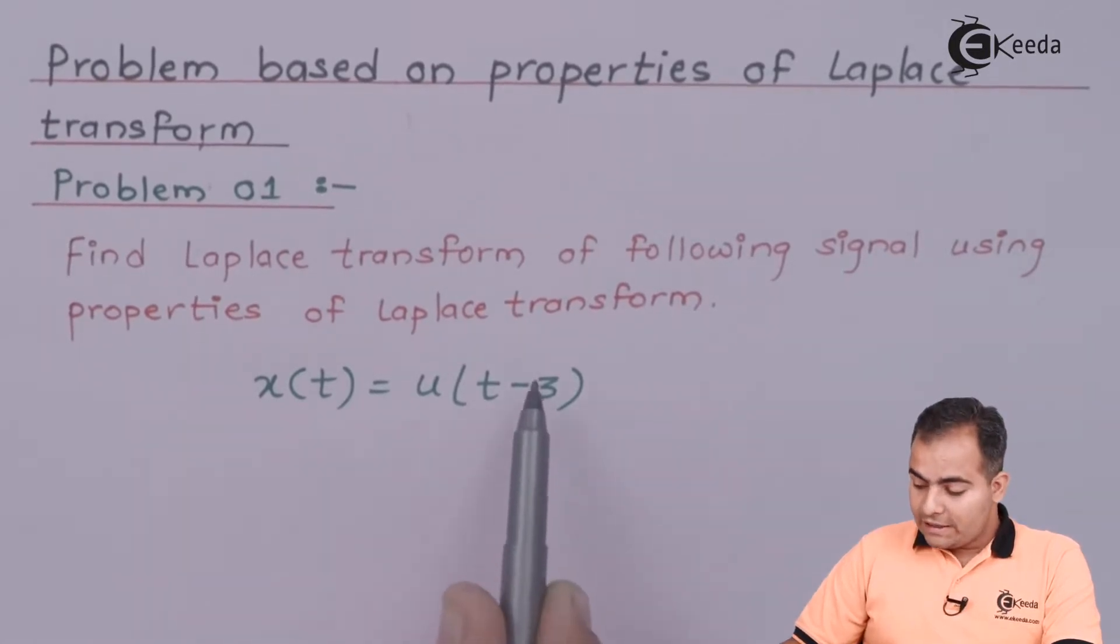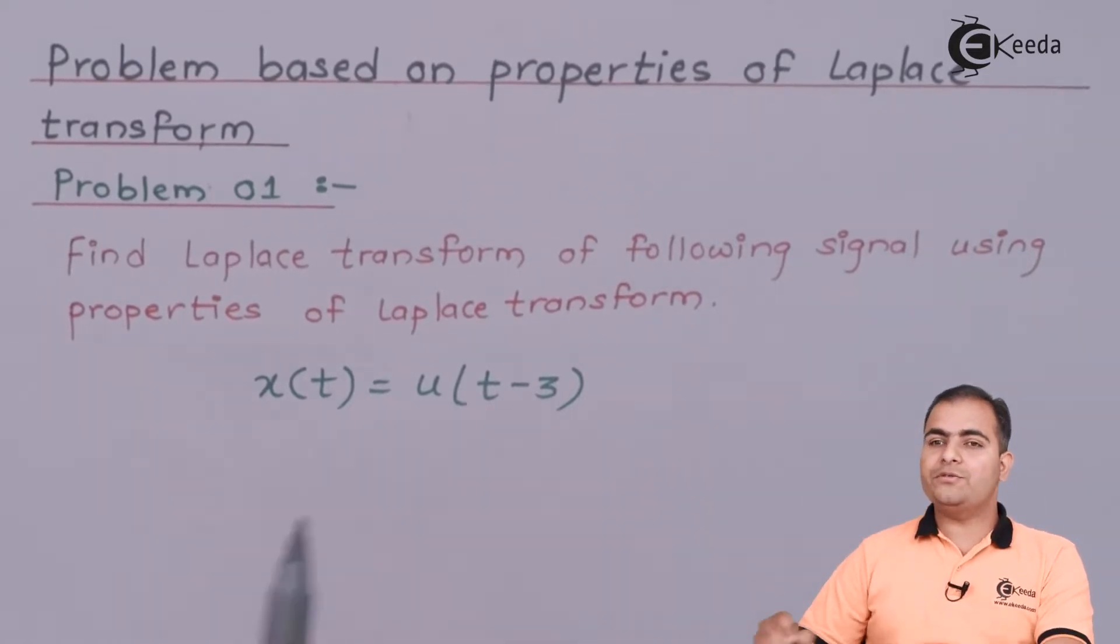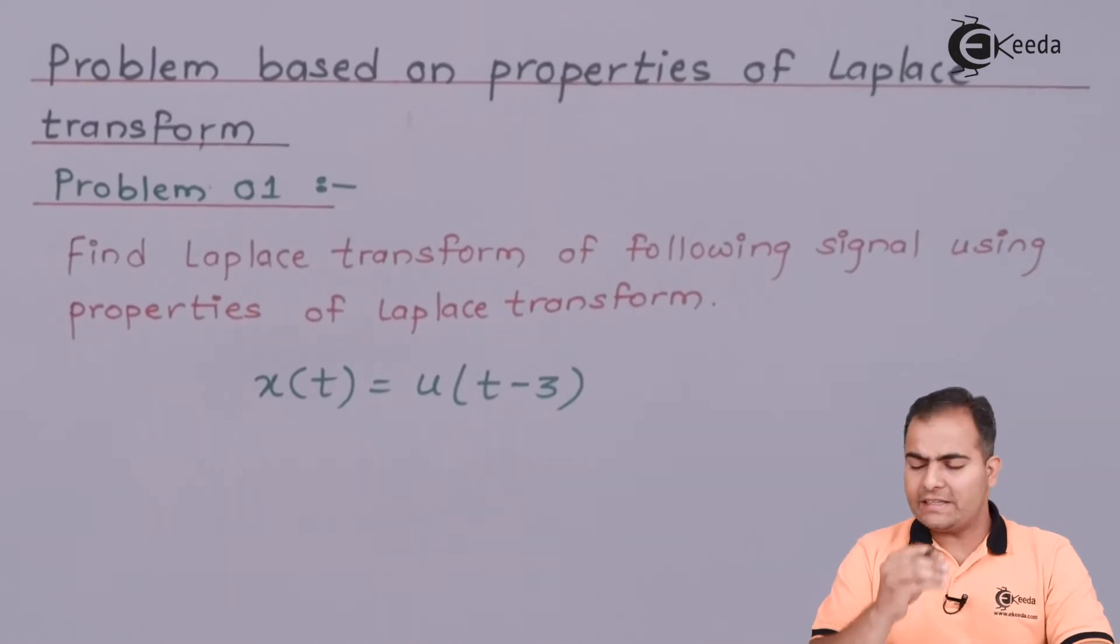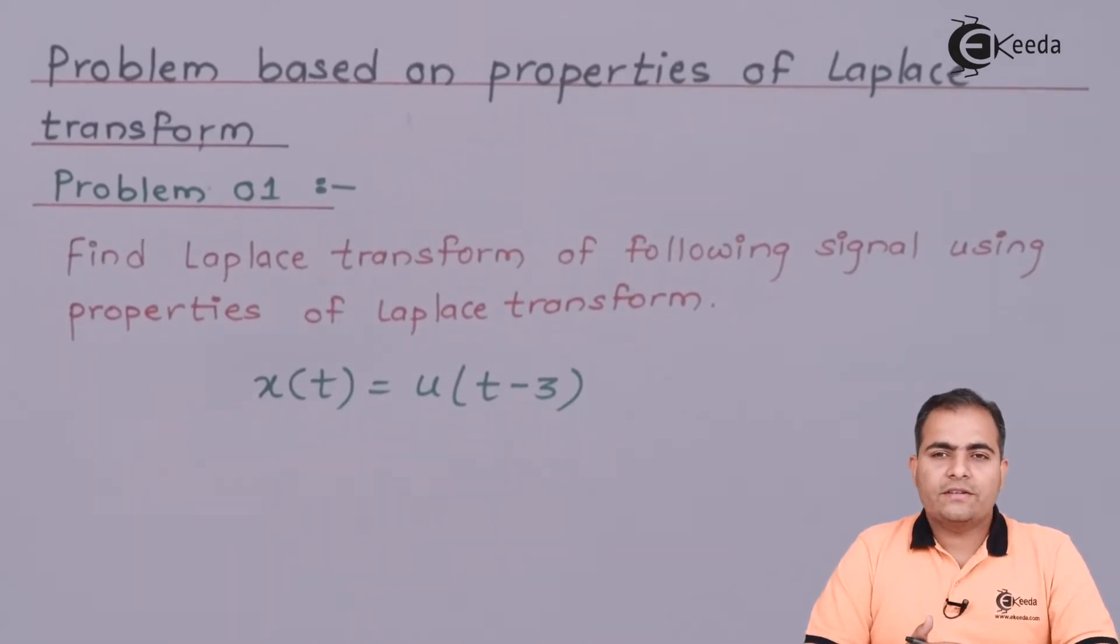Now you can say that u(t-3) is mentioned, which means this time is delayed. So you can use a time shifting property and it is easy to understand. So let's see the result of this function.